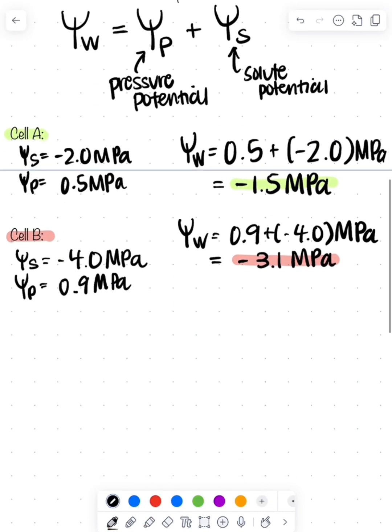Students sometimes have trouble with which one has a higher or lower water potential. Let's look at a number line. We put 0 on it, we'll put negative 1.5 megapascals, which was cell A, and then we'll put negative 3.1 megapascals, which was cell B.